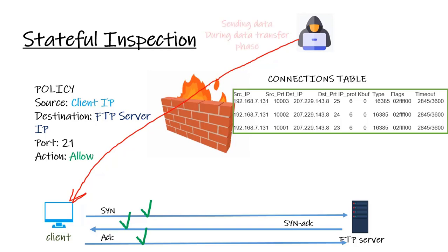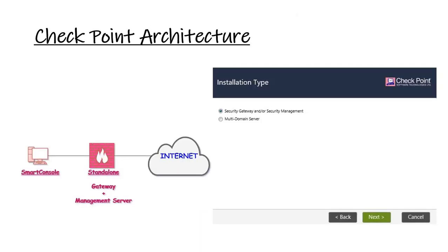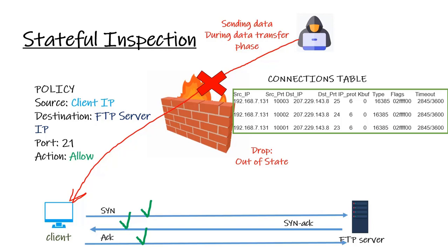If the hacker tries to send malicious data to the client while pretending to be the FTP server, it will be dropped because it's out of state. The type of data for that TCP connection will differ from what the firewall expects from the FTP server. The sequence number in a TCP session isn't sequential like 1, 2, 3 — it's a large random number, and the firewall expects the precise next value. So if we expect sequence number 123 but receive something different, it's dropped. This makes it nearly impossible to guess.